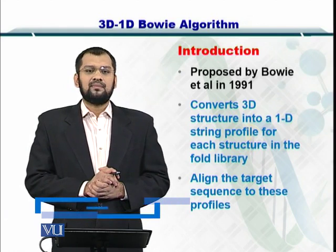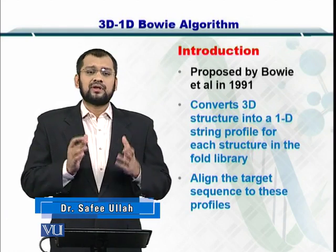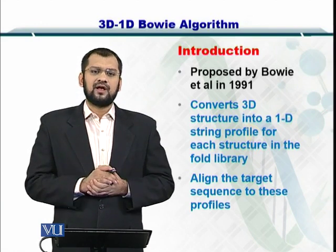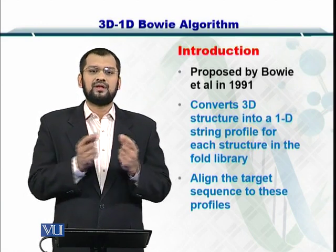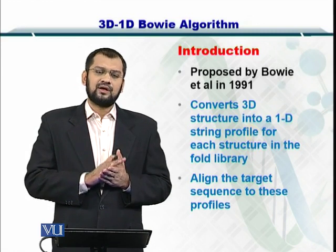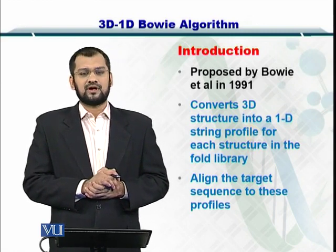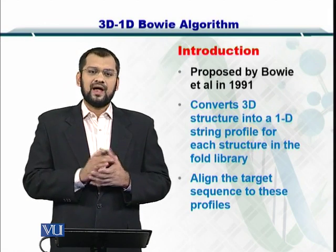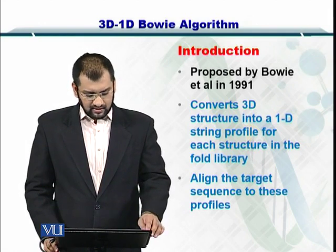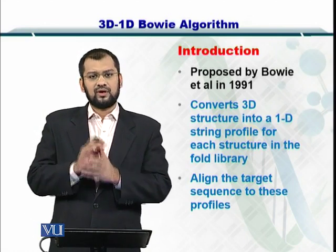Now, towards the 3D-1D Bowie algorithm. This was proposed by Bowie et al. in 1991. What it does is convert the 3D structural profile of a protein structure into a 1D array. You can then compare this 1D array to all the amino acids within the sequence for which you want to predict the structure. If you get a very good match, you can successfully predict that structure. To start, you align the target sequence to the 1D profile.